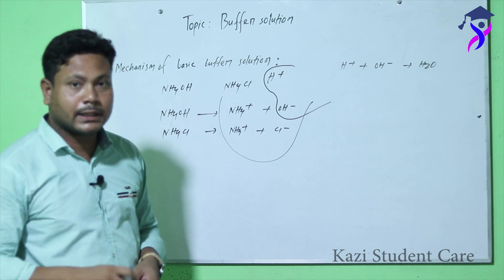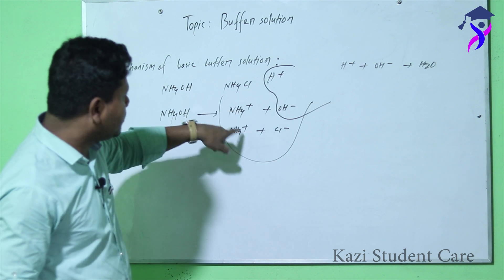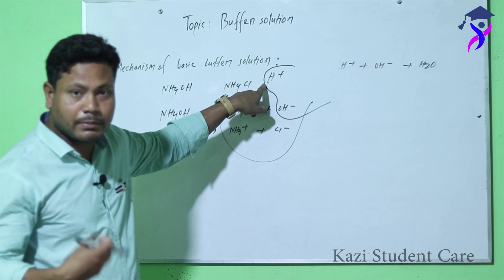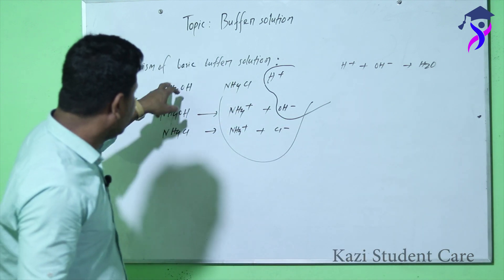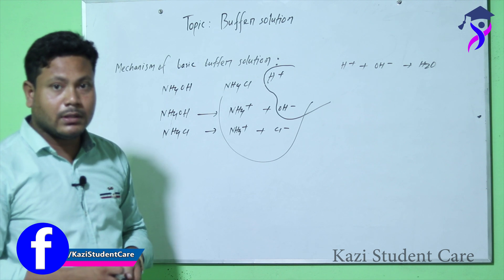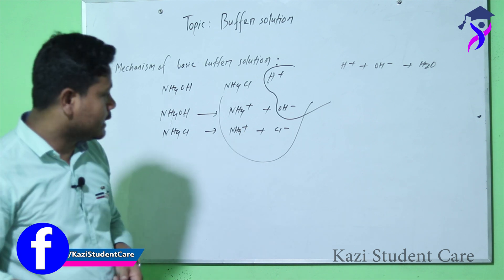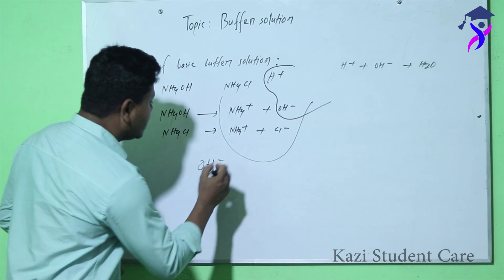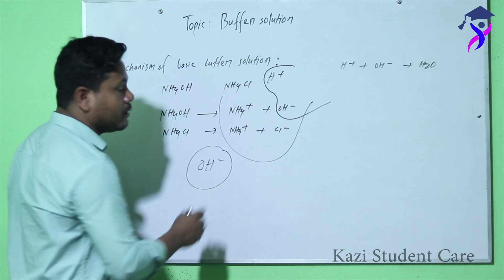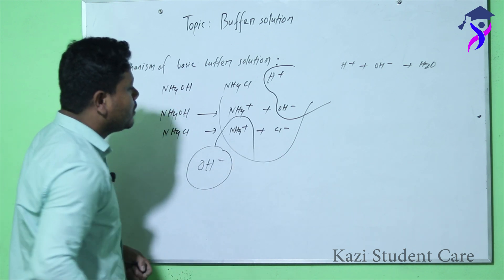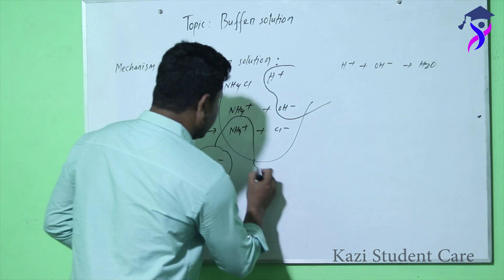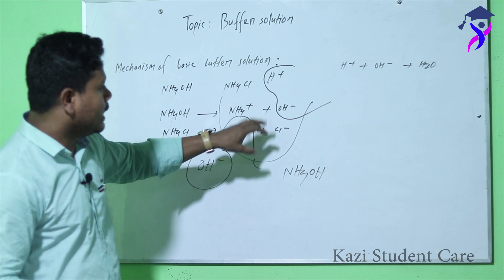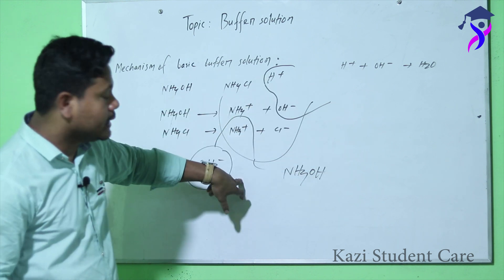Ammonium hydroxide is a weak base, so it ionizes partially and produces NH4⁺ and OH⁻ ions. If the OH⁻ ions of the solution react with the H⁺ ions of the acid and produce water, the same amount of OH⁻ ions is produced again from the partial ionization of ammonium hydroxide. That is why the concentration of OH⁻ ions and the pH value remain the same. Secondly, if we add a small amount of base — base means OH⁻ ions — then the OH⁻ ions of the base react with the NH4⁺ ions of the basic buffer solution and produce ammonium hydroxide. That is why there is no increase in OH⁻ ion concentration and the pH value also remains the same.